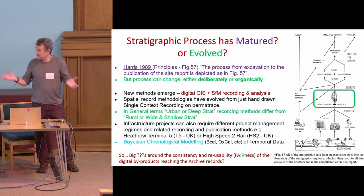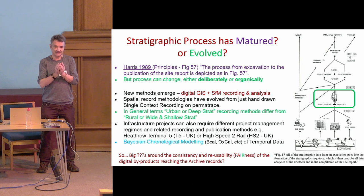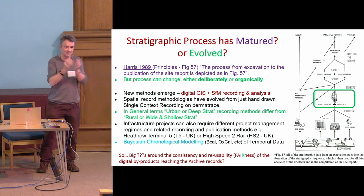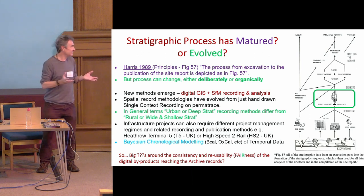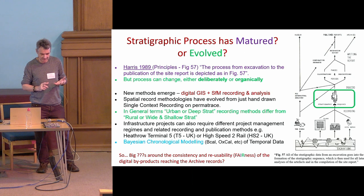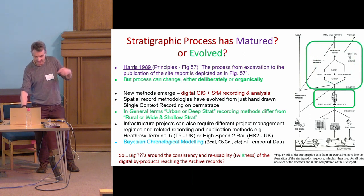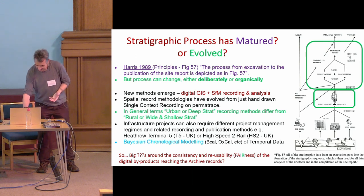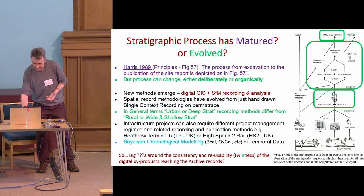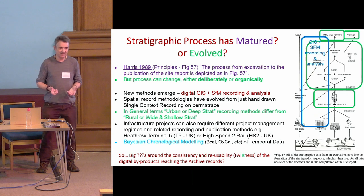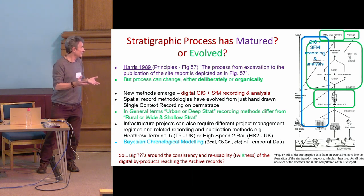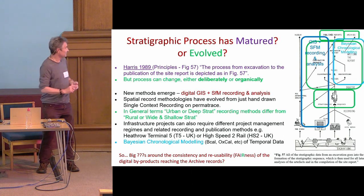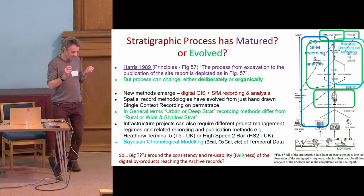We focused on stratigraphic data as a case study — it's an important part of the record used to join up lots of other information. Going back to the single context recording method and Harris Matrix work: Harris's 1989 publication identified those same steps through to archive. But things have changed since 1989 — we now use RTI, GIS, structure-from-motion, Bayesian chronological analysis, and all these methods have altered how data ends up in our archives.